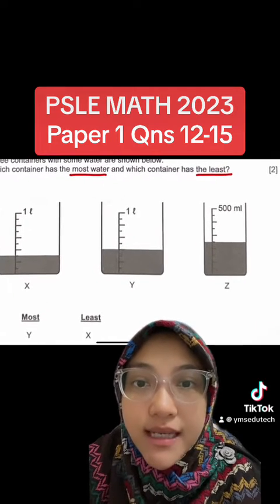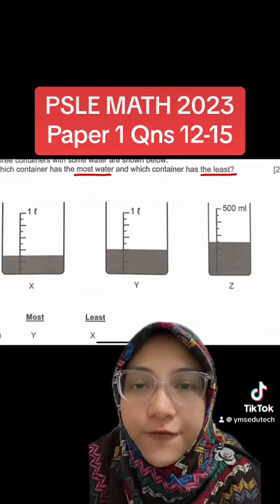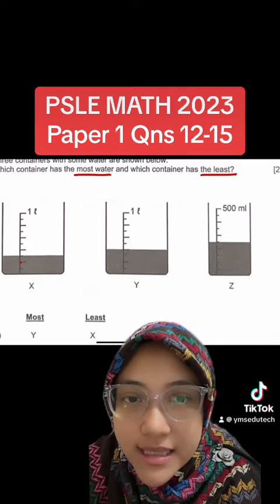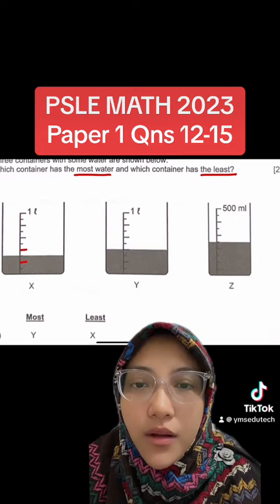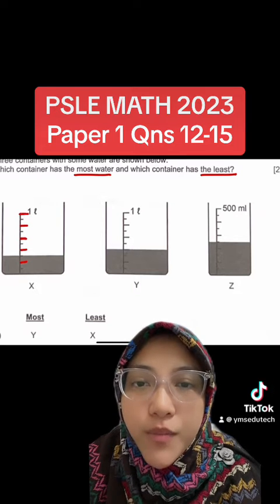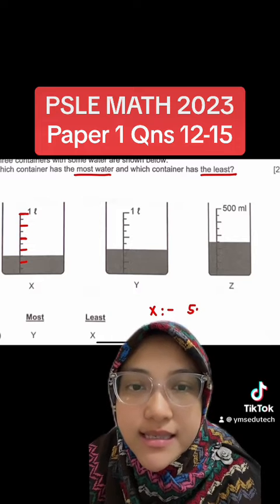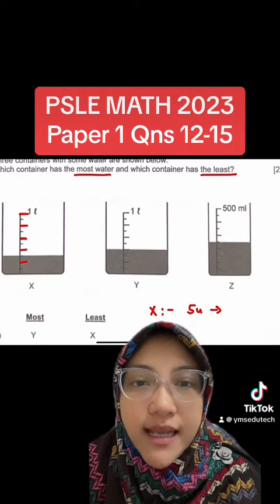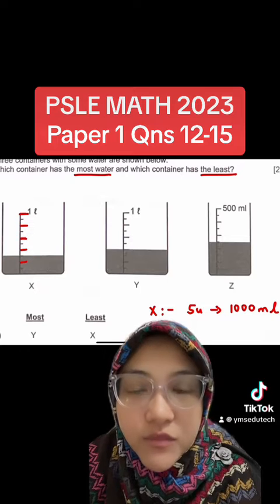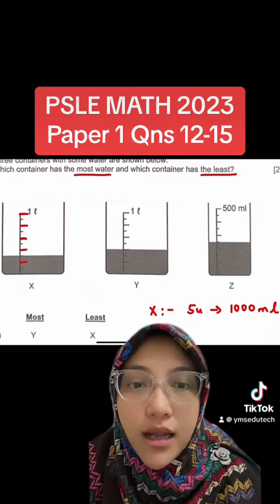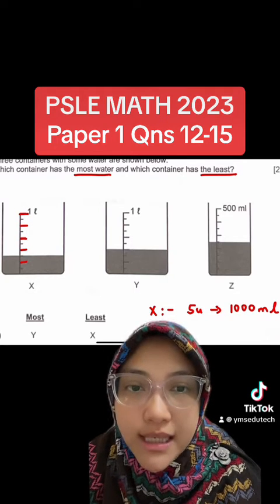Focus our attention on the longer lines of each container. Let's start off with container X. Container X has five of those longer lines, so that represents five units. Convert one liter into milliliters. Five units represent 1,000 milliliters. Always find one unit and that gives us 200 milliliters.